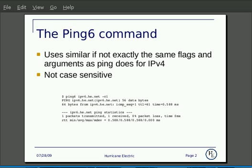On the Linux command line, the ping6 command is used to send ICMP packets to hosts or IPv6 addresses out on the network. It uses similar, if not exactly the same, flags as ping does for IPv4. It is also not case-sensitive regarding either the hostname you're trying to ping or the IPv6 address.